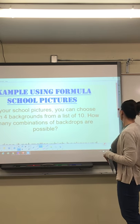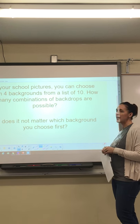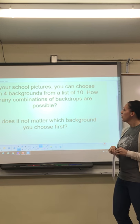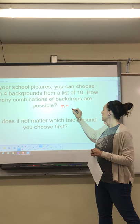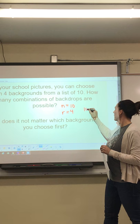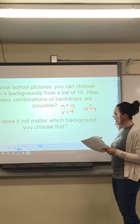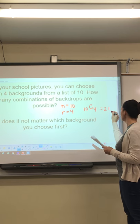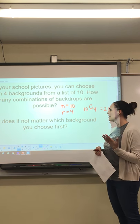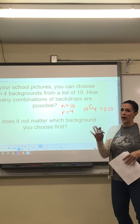Another example I want to walk through is your school pictures. You can choose 4 backgrounds from a list of 10 backgrounds. How many combinations of backdrops are possible? So your n is 10, and your r is 4. You're going to plug in 10 nCr 4 in your calculator. Try it and make sure you can get the same answer. I'm getting 210. You have to stop and think in this example, why are we doing combinations? Well, because the order is not important which background you choose first. You're just choosing 4 backgrounds total.